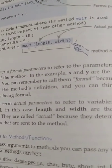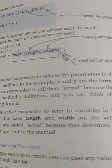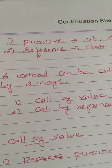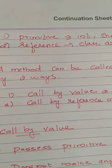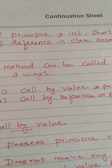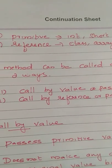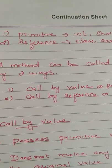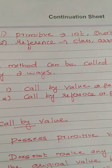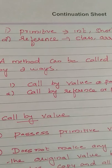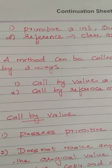There are two types of values we can pass through our method: primitive and reference. Primitive type values include int, short, double, char, and string. Another type of value we can pass as an argument is reference type, which includes class, array, and object. We can pass these two types of arguments through our method.